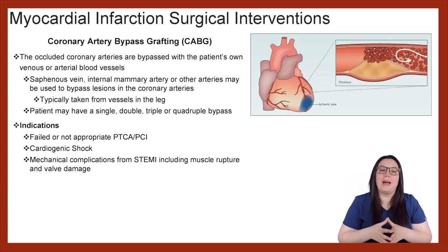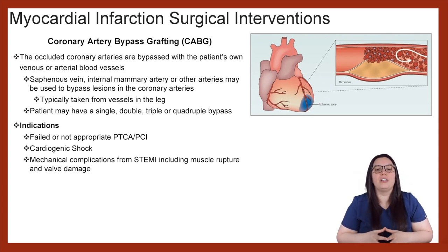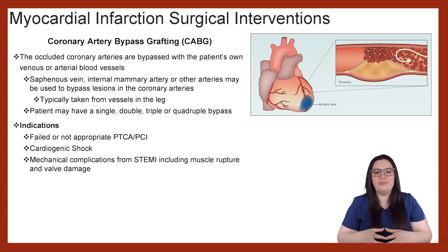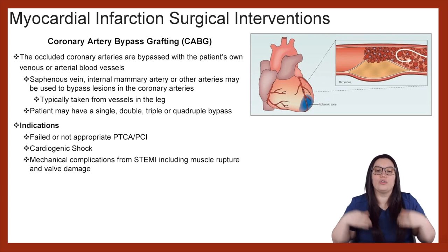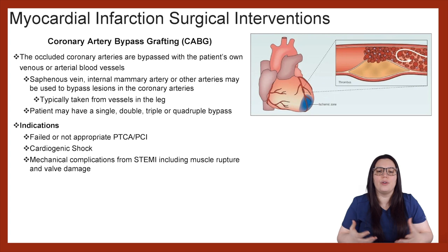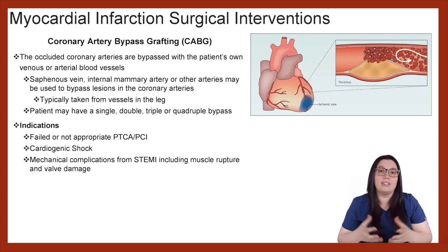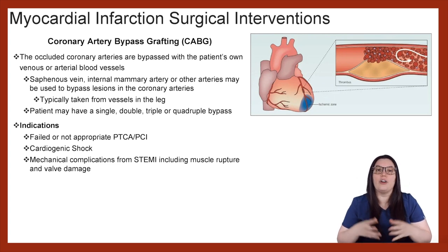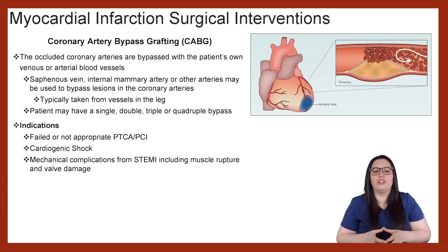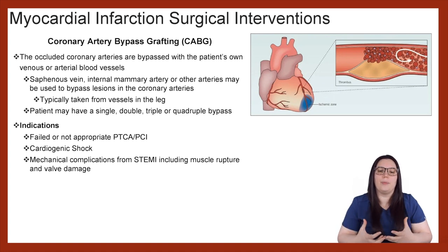Finally, let's take a closer look at the coronary artery bypass grafting procedure. When we have occluded coronary arteries that require bypassing due to the extent of the damage — meaning the coronary arteries are not salvageable — CABG is a great option because it uses the patient's own venous or arterial blood vessels. Vessels that can be harvested include the saphenous veins from the legs, internal mammary arteries, or other arteries. Patients may have a single, double, triple, or quadruple bypass depending on how many arteries are affected. Indications for this procedure include a failed or inappropriate PTCA/PCI, cardiogenic shock, or mechanical complications from a STEMI such as muscle rupture or valve damage.